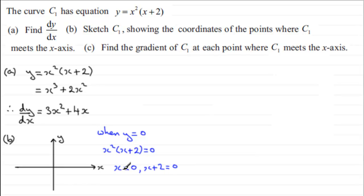And that would lead to, well, here we've got x is 0, and if we subtract 2 from both sides, here we get x is minus 2. So the curve is going to cross the x-axis at minus 2. So just mark that there.